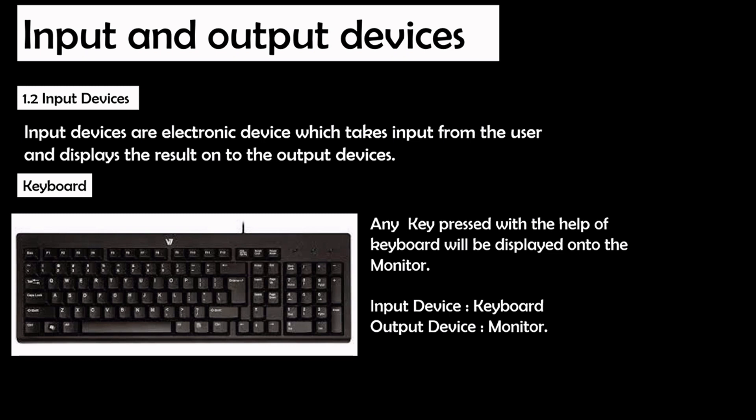The next topic is input and output devices. The definition of input devices states that an input device is an electronic device which takes input from the user and then displays the result on the output device. A prime example is a keyboard — any key pressed on the keyboard results in the corresponding action displayed on the monitor as output, meaning the keyboard is an input device and the monitor is an output device.